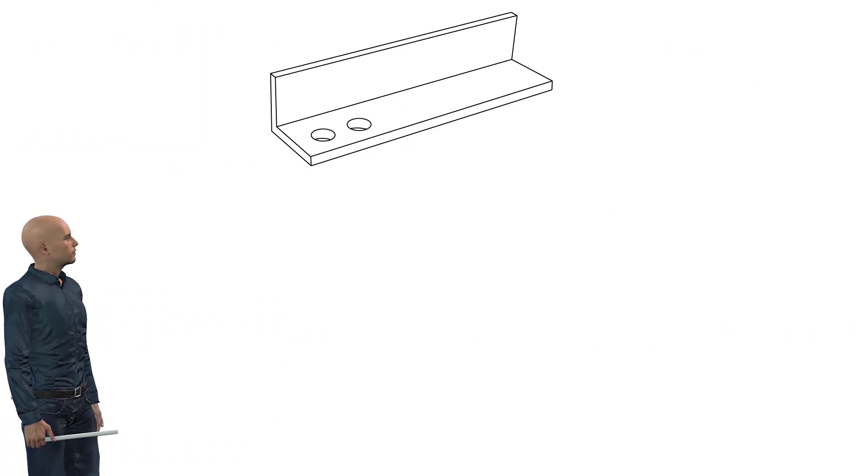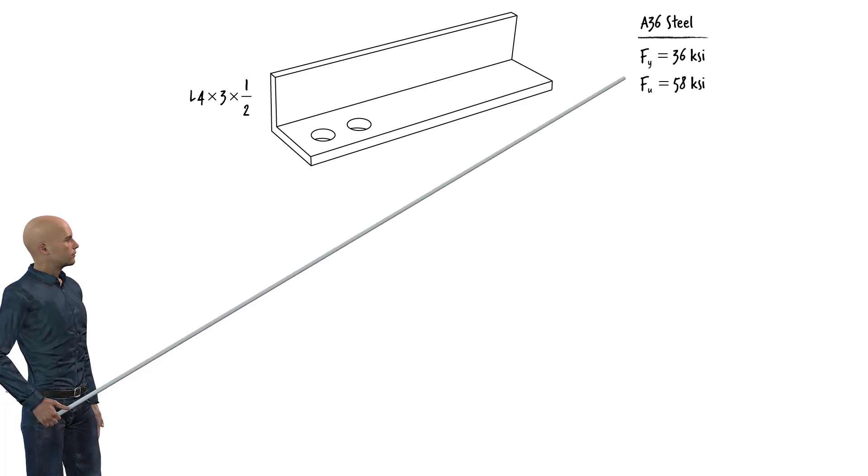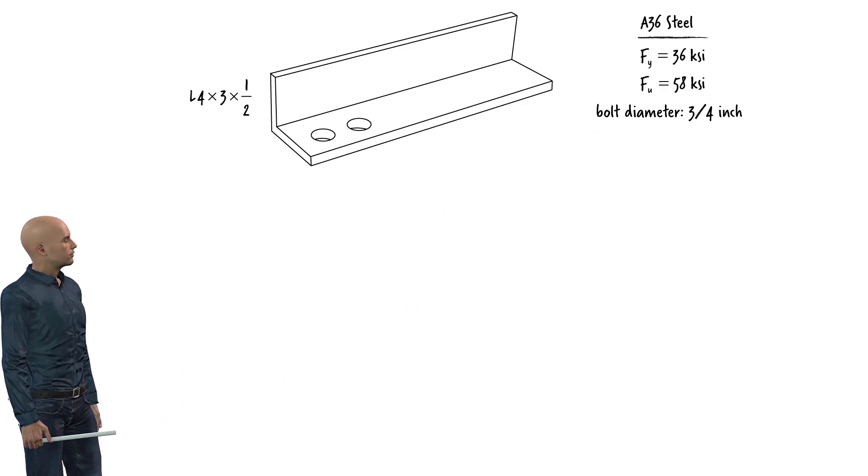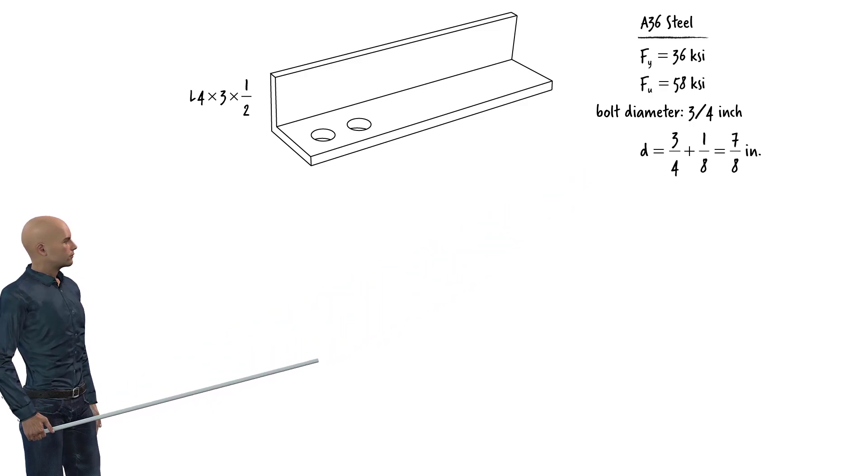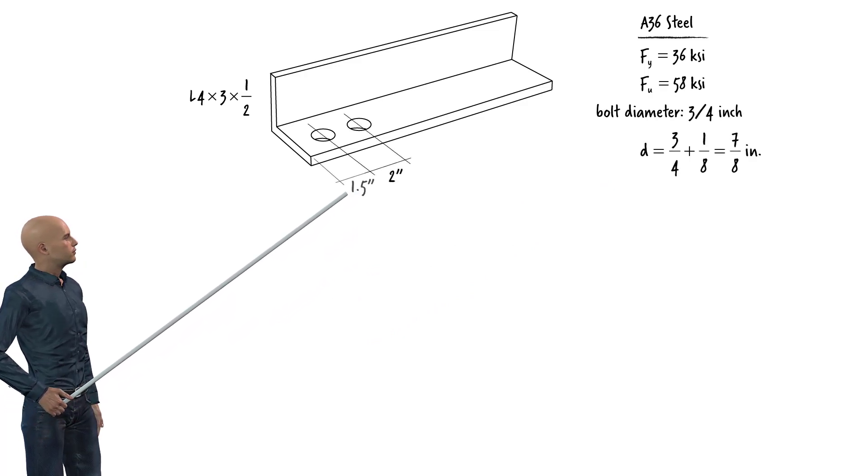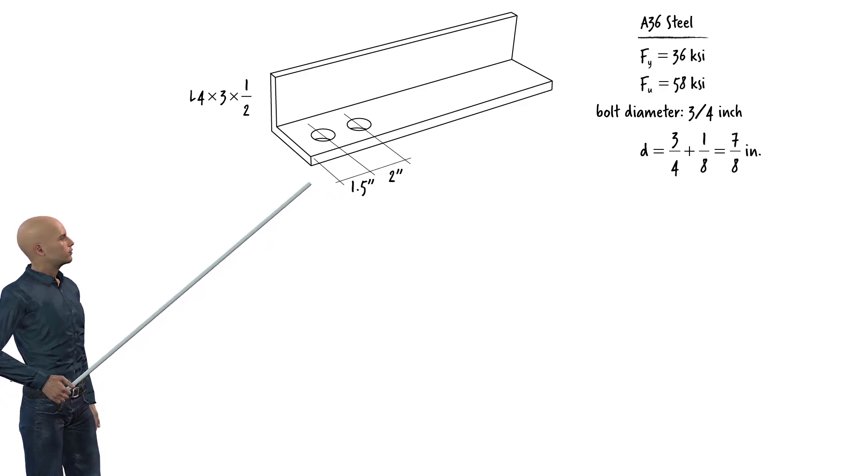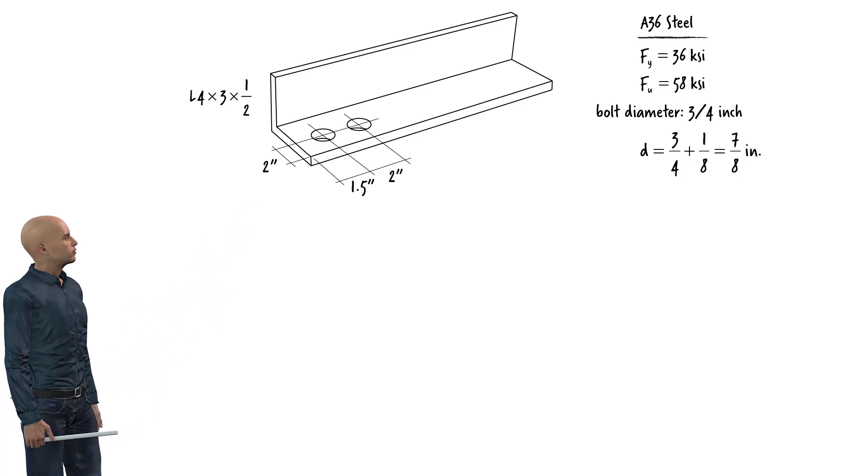Suppose our tension member has the standard L4 by 3 by 1 half cross section. Assuming A36 steel is being used, Fy equals 36 Ksi and F sub u is 58 Ksi. The two holes are made for 3 quarter inch bolt diameter. The diameter of each hole equals the bolt diameter plus 1 eighth of an inch. The spacing between the two bolts is 2 inches, and the edge distance is 1 and a half inches. The bolts are located 2 inches from the edge of the long leg of the angle. We wish to determine the block shear strength of the member.